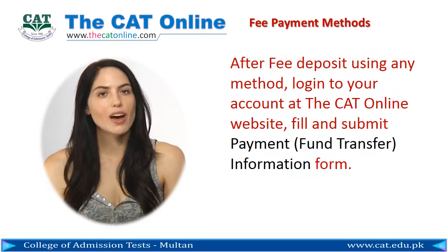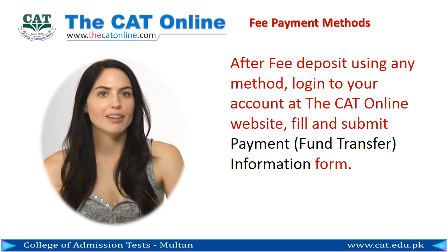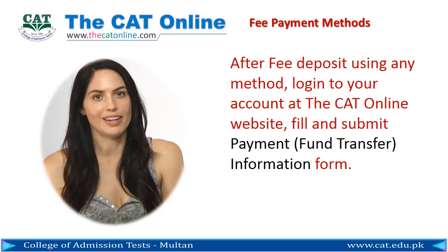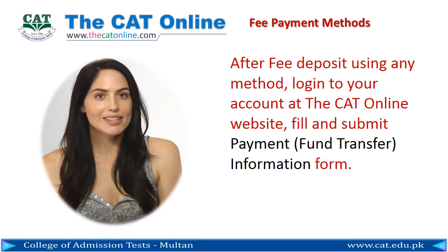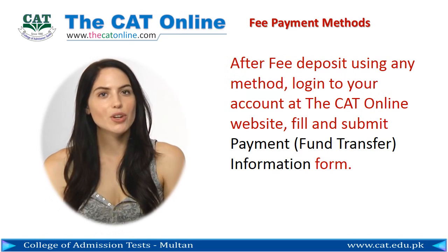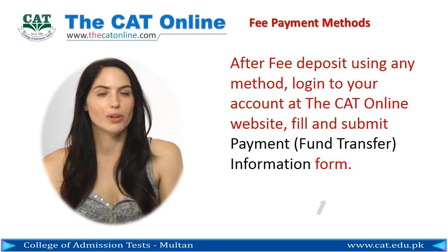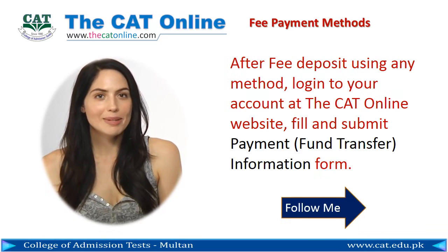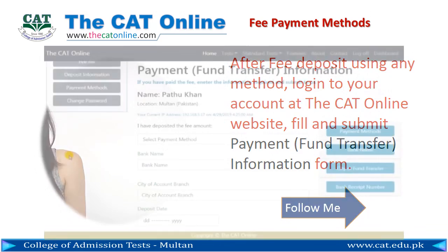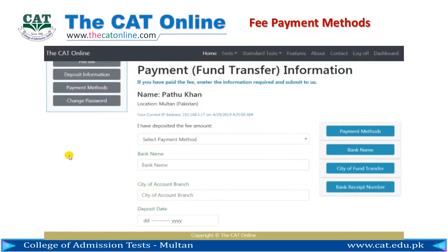After fee deposit using any method, log in to your account at the CAT Online website. Fill and submit the payment fund transfer information form. On the payment fund transfer information page, select the payment method you have used for the fund transfer.